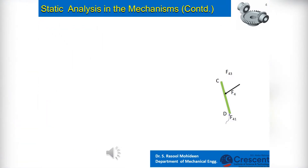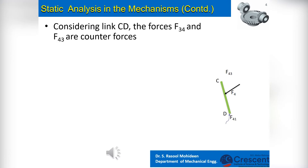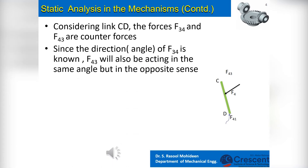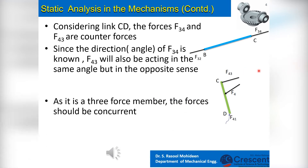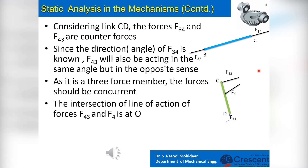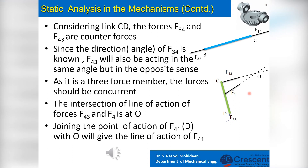Similarly, to find the line of action of forces in link CD: the forces F34 and F43 are counter forces. Since the line of action of F34 is known, the counter force F43 will also be acting at the same angle but in the opposite sense. As it is a 3-force member, the forces should be concurrent. The intersection of the lines of action of forces F43 and F4 is found to be at O after extending them to meet. Joining the point of action of F41 — that is point D — with O will give the line of action of F41.